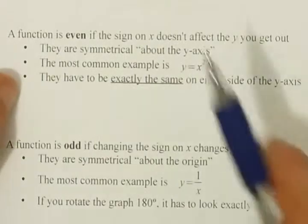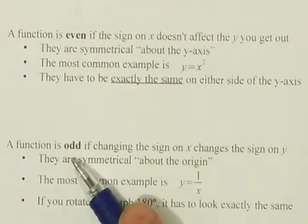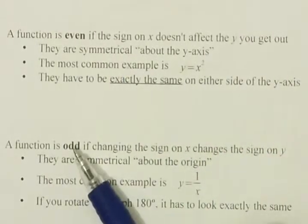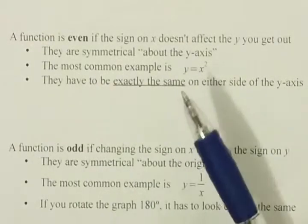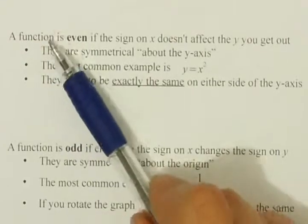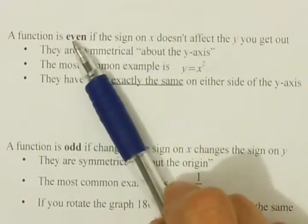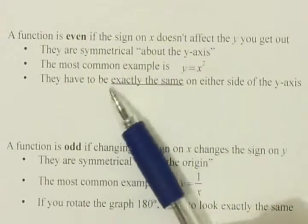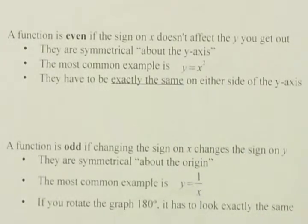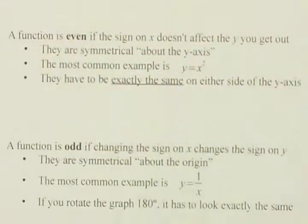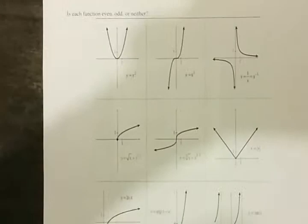The last thing for section 3 is the difference between an even and an odd function. These words can be a little confusing — I don't want you thinking about even and odd in terms of the numbers themselves, although they are slightly related. A function, graph, or equation is even if the graph is perfectly symmetrical — exactly the same on either side of the y-axis. I have some examples on this page — I'm going to zoom out so you can see them all at once.